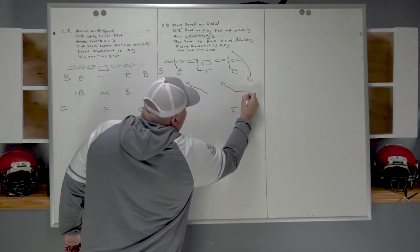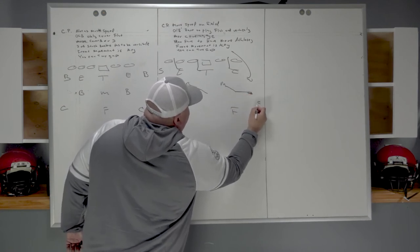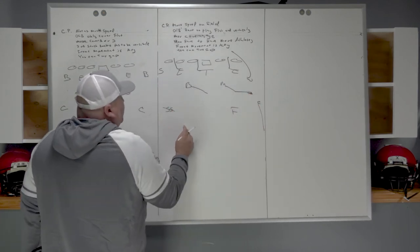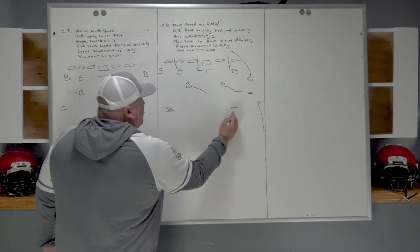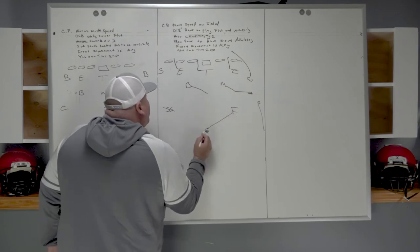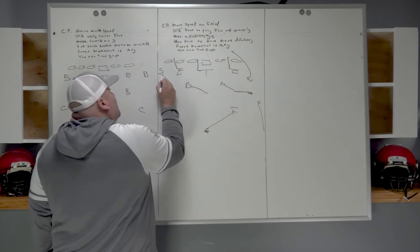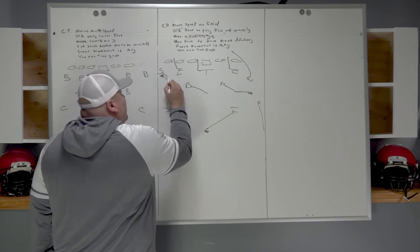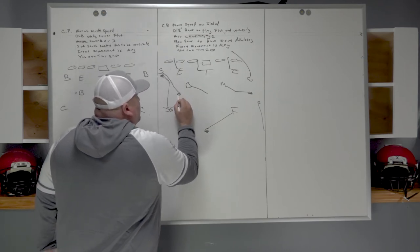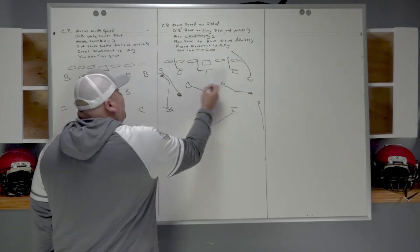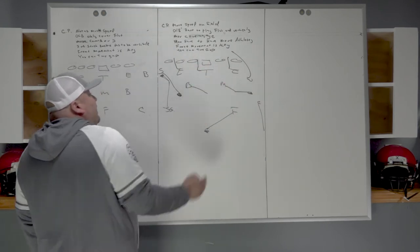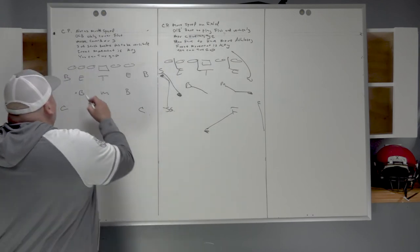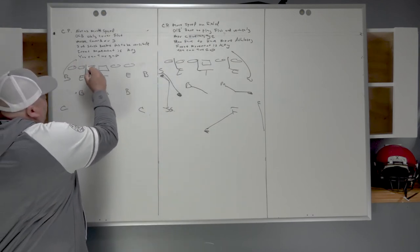So that would draw something like this so you guys get the picture. Will's coming, he's gonna stem away. We got the hole to hook player, we got a curl to flat player who's got extended flat, we'll have a corner dropping. He's gonna spin in the middle of the field, he'll drop and play the hook. Sam's gonna drop and play the hook to curl area here.